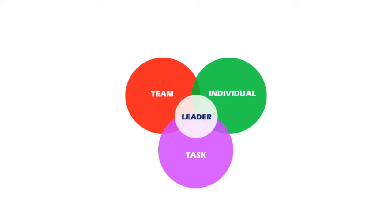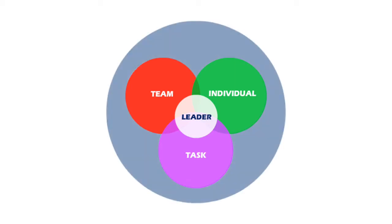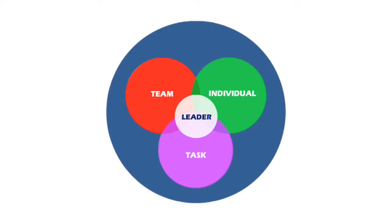The leadership situation can also affect the needs of the team, the individuals, the task, and the leader. If a situation changes, the team will need to perform the task differently. For example, if you're sailing a yacht in calm weather, it's quite different from sailing in a rough sea. As the situation affects every need, the situation is placed as a circle around all of them.